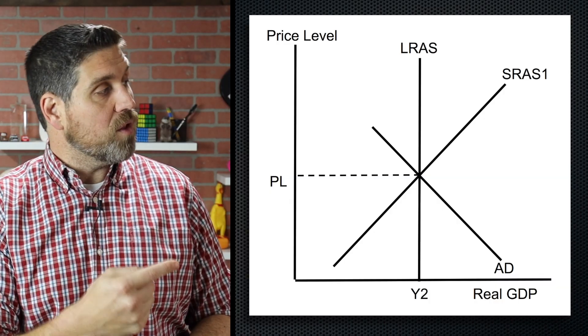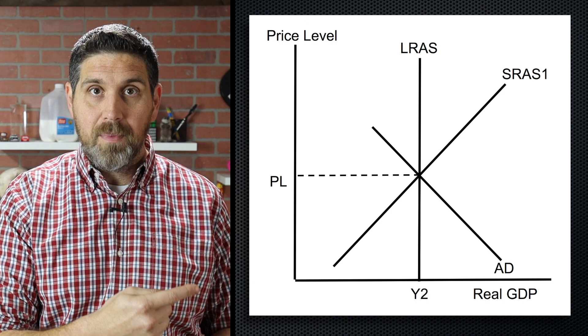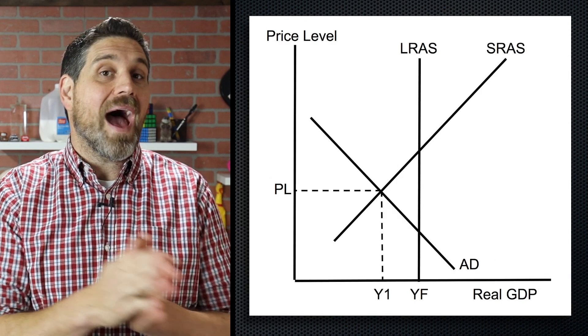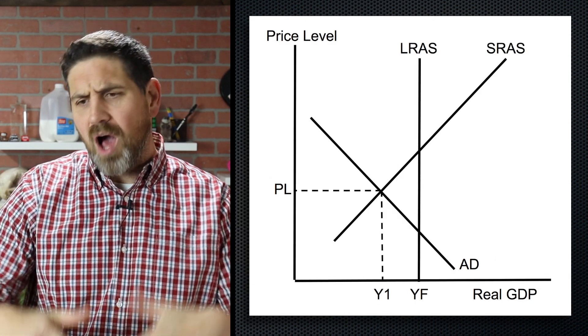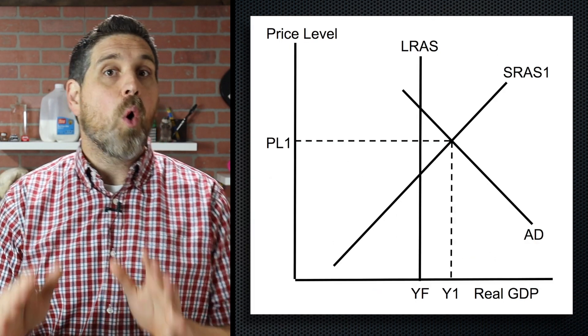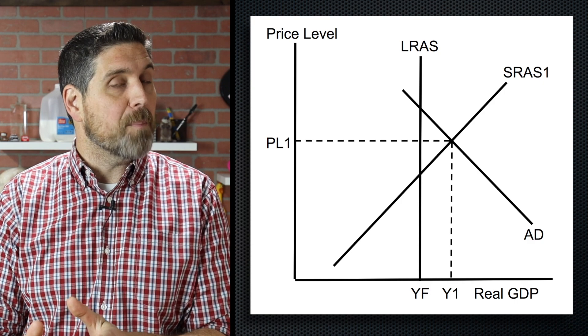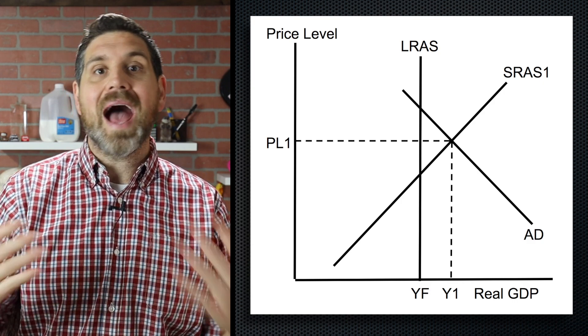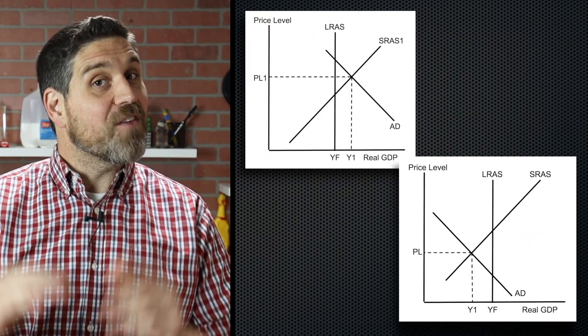At this point in unit three, you understand aggregate demand, short run aggregate supply, long run aggregate supply, and you can draw and shift them. You understand the economy can be in one of three places: it can be at full employment — the natural rate of unemployment — it can have a negative output gap where the economy is doing bad and there's high unemployment, or it can have a positive output gap where there's high inflation and the economy is overheating.